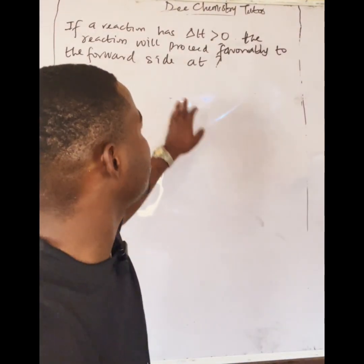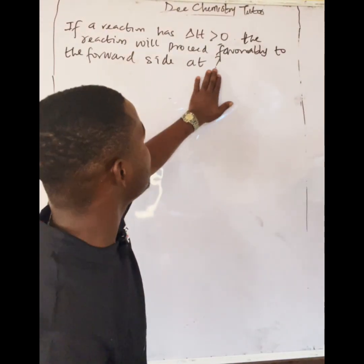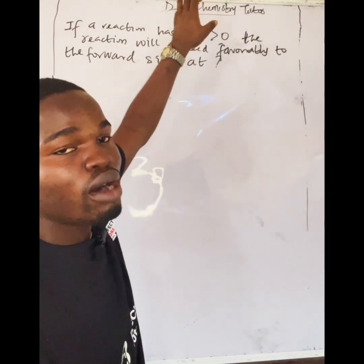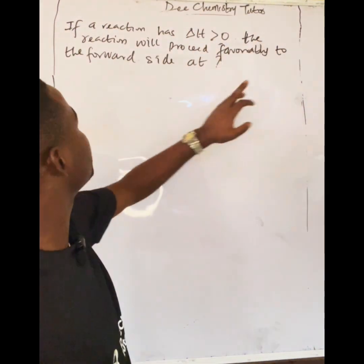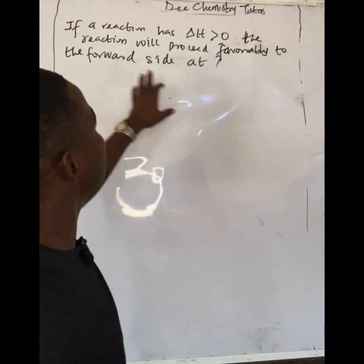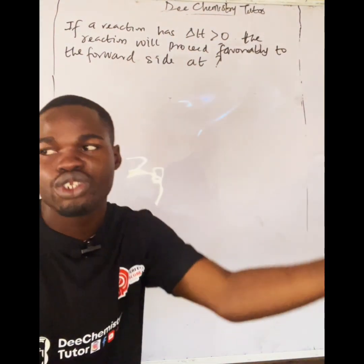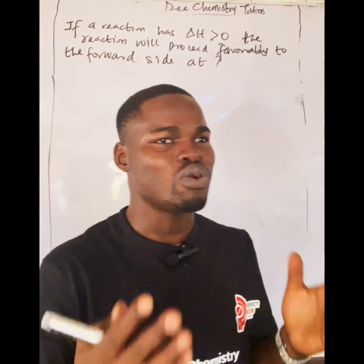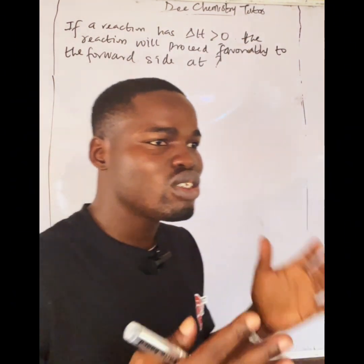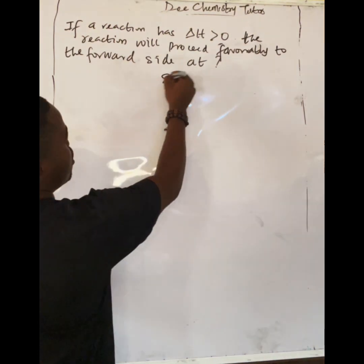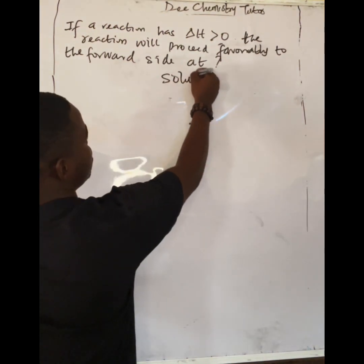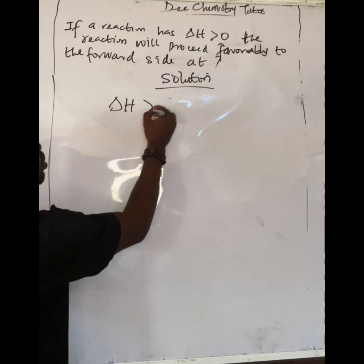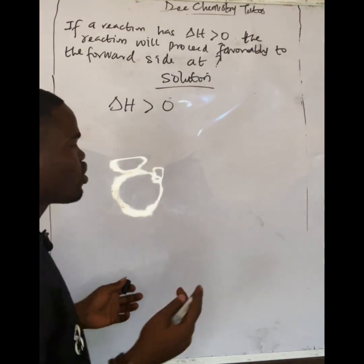Good afternoon everyone. Look at this question: If a reaction has an enthalpy change greater than zero, the reaction will proceed favorably to the forward side at what condition? Now this is a very good question that does require you to put some things together. The first statement is that the enthalpy change is greater than zero.